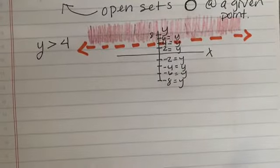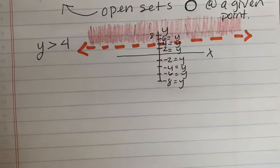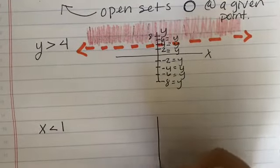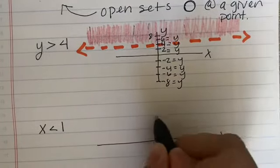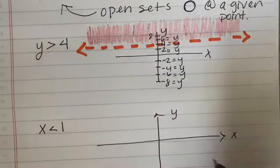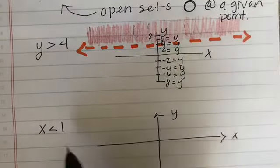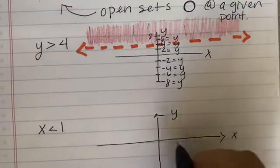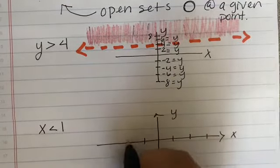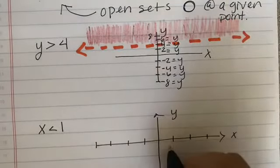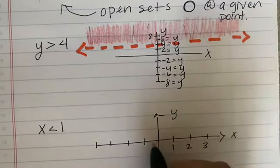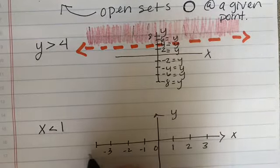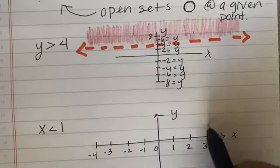Now let's suppose we have an X value, so X is less than 1. We're going to look at the X and Y plane again and talk about a number line. X is less than 1 means we're talking about numbers to the left. So labeling consecutive numbers: 1, 2, 3, and going back 0, negative 1, negative 2, negative 3, negative 4. X is a vertical line at each of these points.